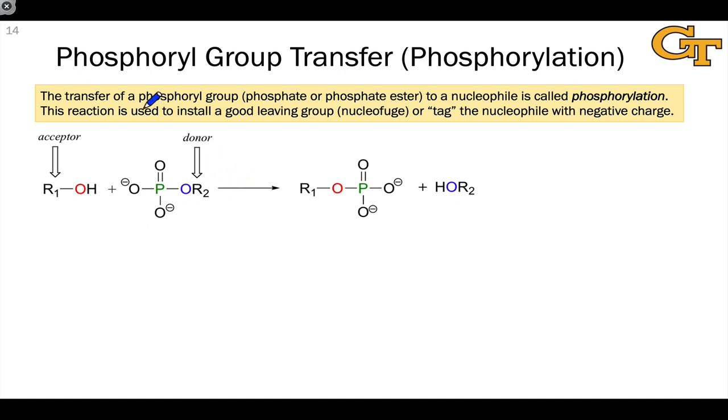The transfer of a phosphoryl group, which is either phosphate itself or a phosphate ester, to a nucleophile is called phosphorylation or sometimes phosphoryl group transfer. This reaction serves two purposes in biochemical systems.